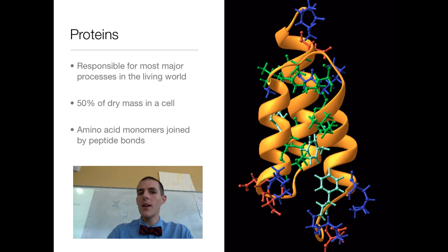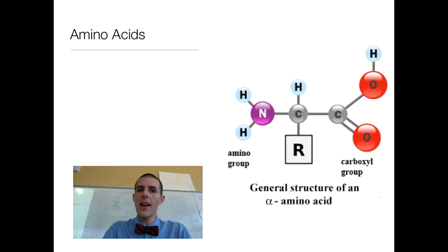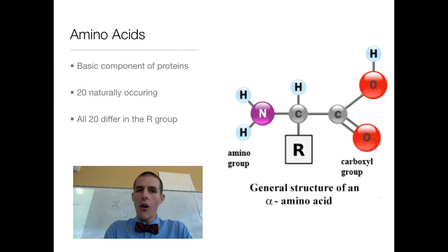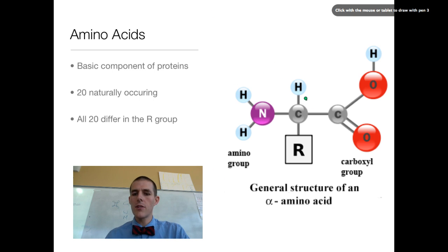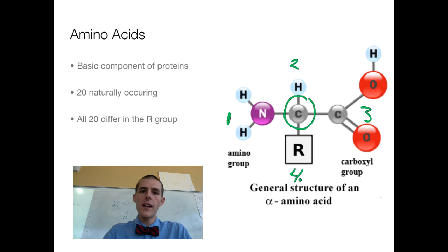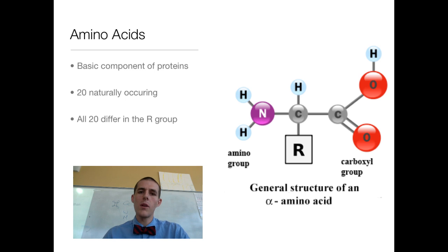So if you put a bunch of amino acids together, you have a polypeptide. There are 20 amino acids that naturally occur, and all 20 of them are exactly the same except for one little component. There is an asymmetric carbon — a carbon that has four different things attached to it — with an amine group, a hydrogen, a carboxyl group, and this magical R group. The R group is responsible for making each of those 20 amino acids different from the others and giving each amino acid its properties.